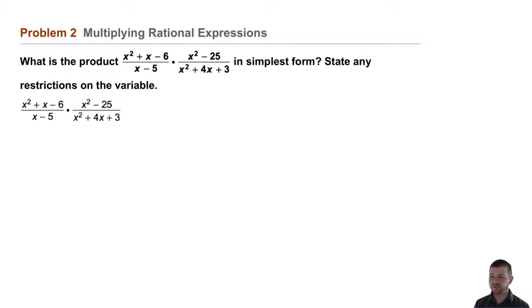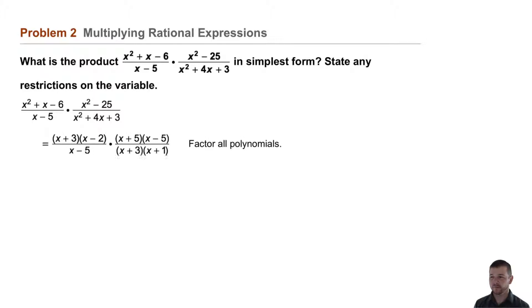First, rewrite the expression and then factor all polynomials, numerator and denominator. Our expression becomes x plus 3 times x minus 2 over x minus 5, times x plus 5 times x minus 5 over x plus 3 times x plus 1.